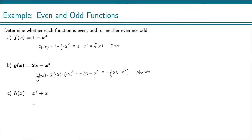For part c, we plug negative x in: h(−x) = negative x to the fifth plus negative x.